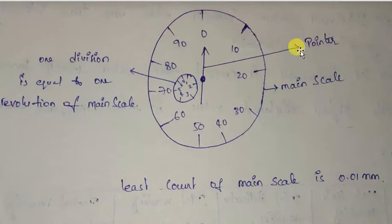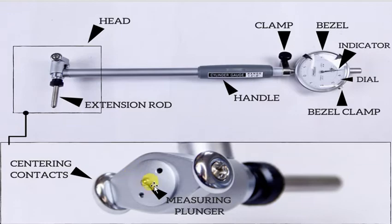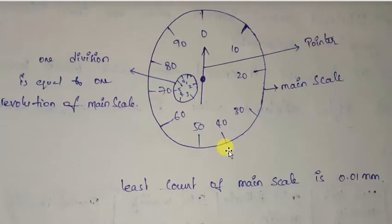This pointer rotates through the help of measuring plunger. This one division is equal to one revolution of the main scale. That is, here this scale shows one division, then that means that the main scale pointer rotates one revolution. The least count of this main scale is 0.01 mm.